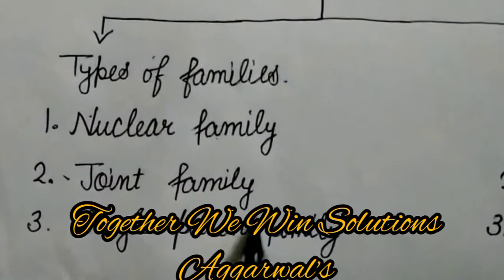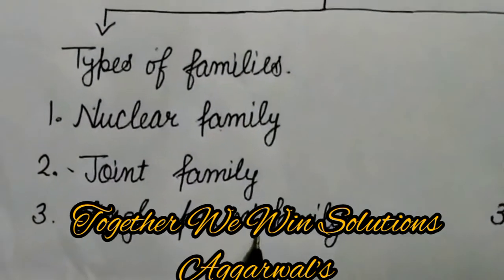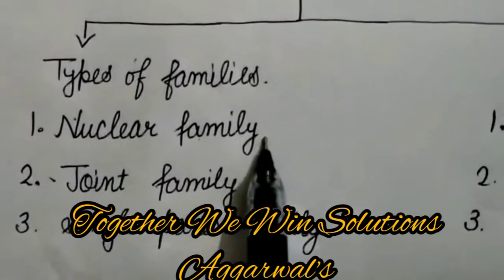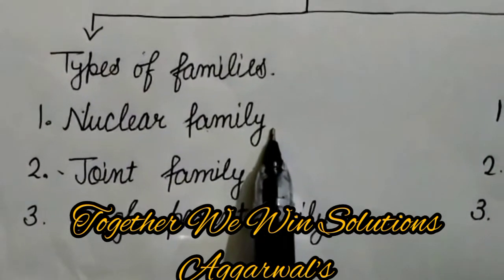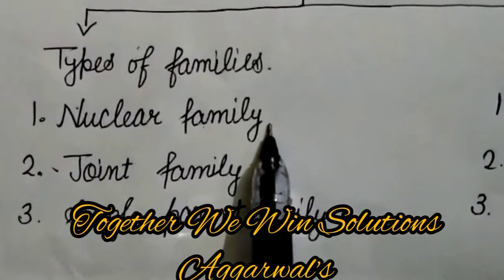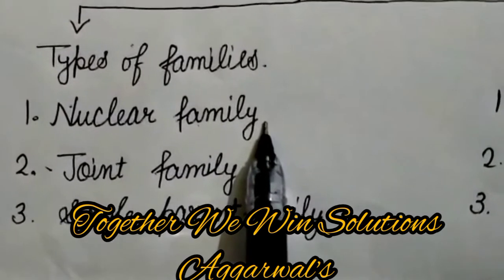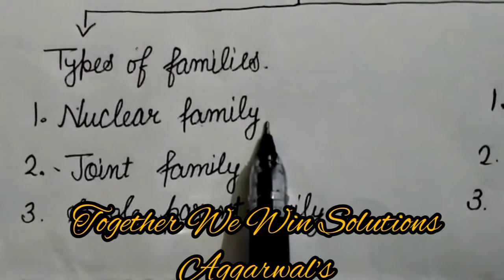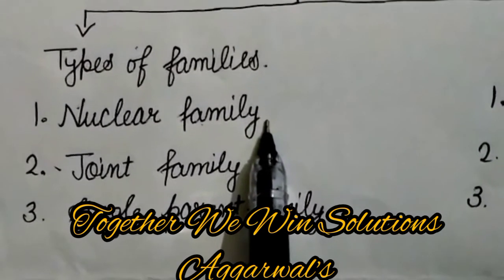second is joint family, and third is single parent family. What is nuclear family? There are three or four members in a family, like mother, father, and their children.